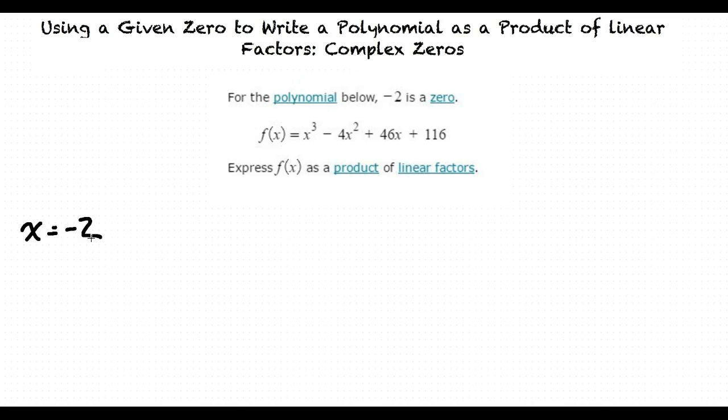Because it is given that negative 2 is a zero, we know that x plus 2 is going to be a factor of the polynomial given to us.